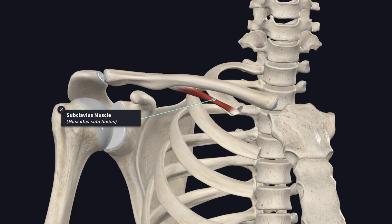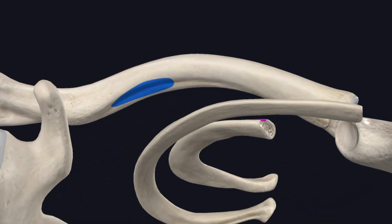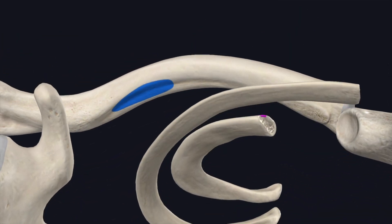Next, we'll see the subclavius muscle. It is a triangular muscle that arises from the junction of the first rib and the costal cartilage, highlighted in pink as the origin. It is inserted into the groove on the under surface of the middle third of the clavicle, highlighted in blue as the insertion.